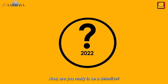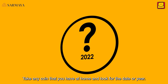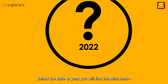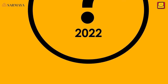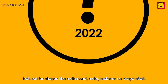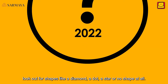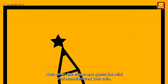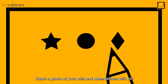Now, are you ready to be a detective? Take any coin you have at home and look for the date. Below the date, you will find the mint mark. Look out for shapes like a diamond, a dot, a star, or no shape at all. Note down the shape and guess the mint that manufactured your coin.